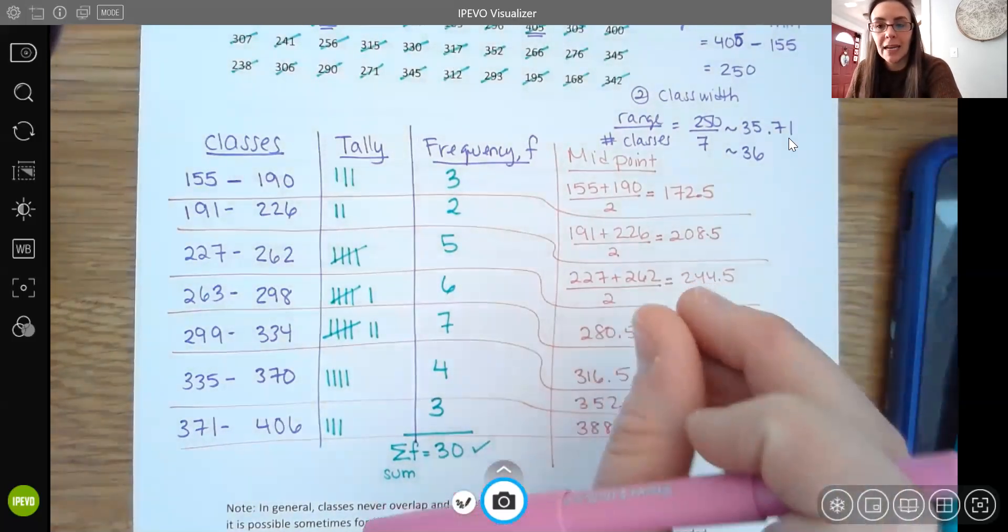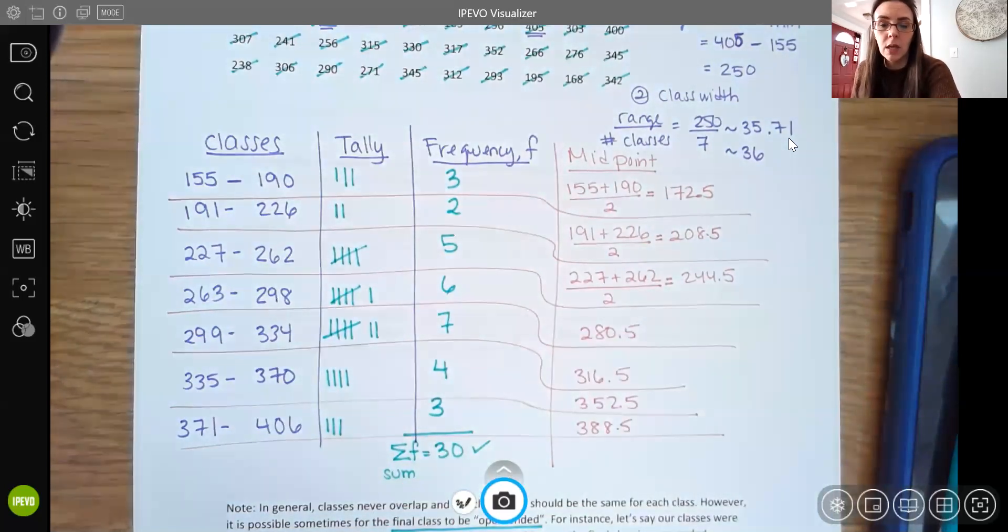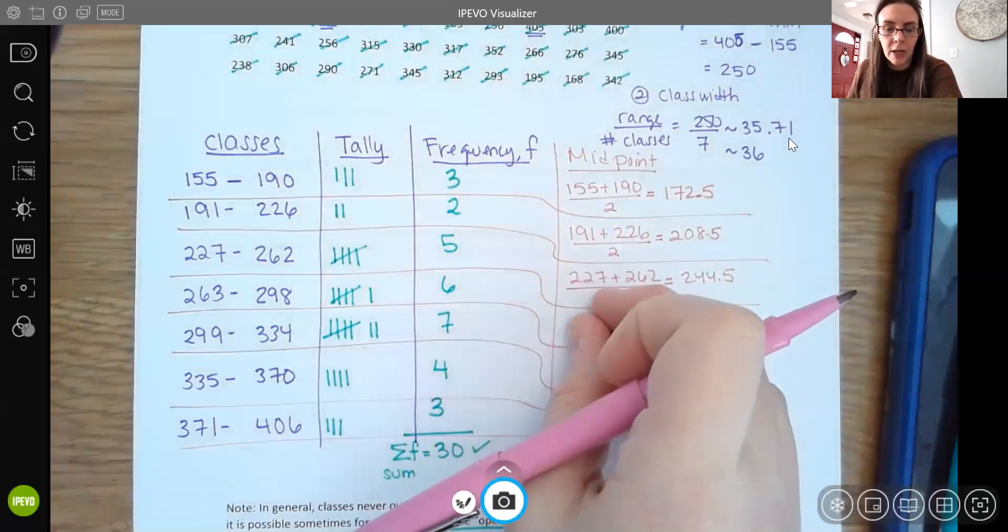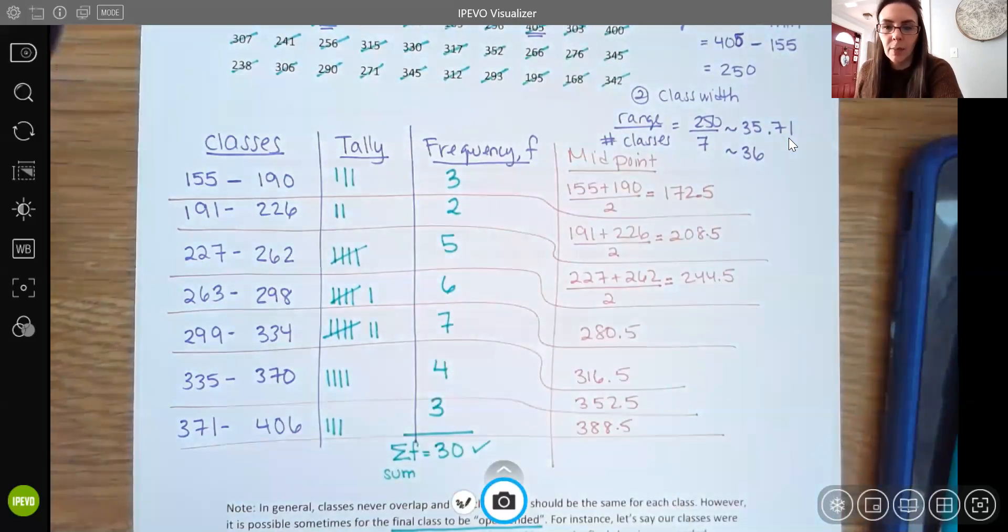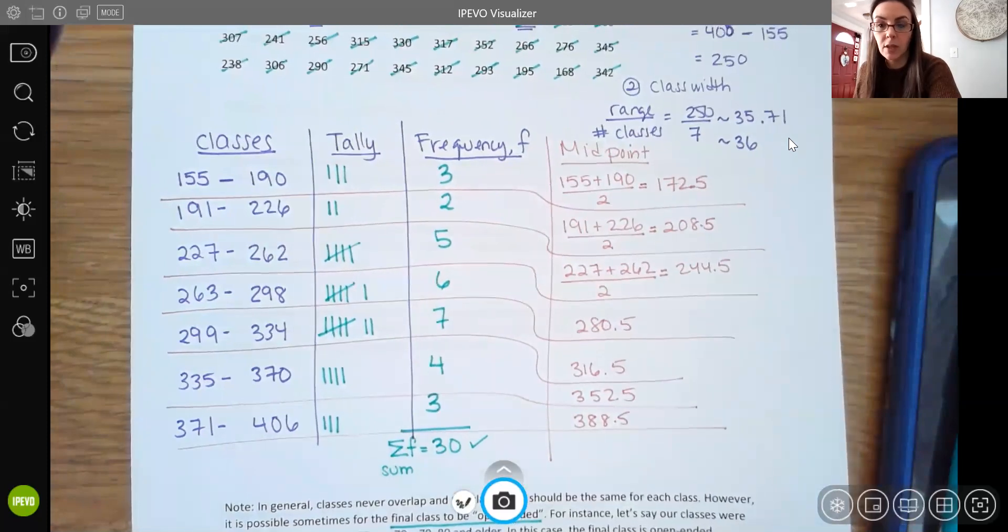Now that midpoint is going to be helpful in our next lecture and the rest of section 2.1 when we're doing things like histograms. We're going to use that midpoint to help us graph. So that's really where it's going to come in later on. Not so much important today, but it's going to help us a lot with our graphing.